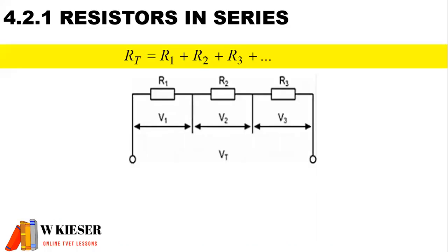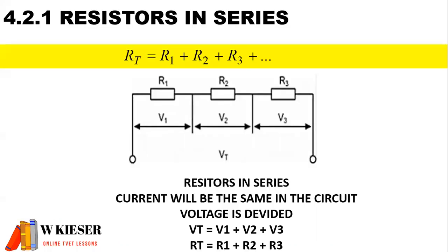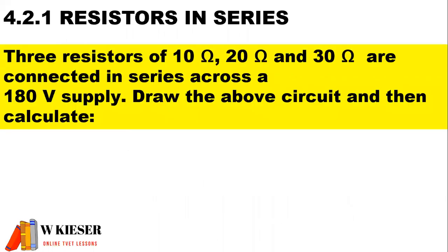For resistors in series, we find that current will be the same throughout the circuit and voltage is divided. Therefore, to calculate the total voltage, it will be the sum of the volt drops. The total resistance will be equal to R1 plus R2 plus R3.